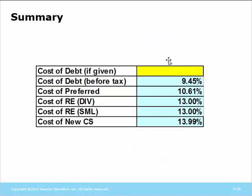In summary, we have the cost of debt before tax, the cost of preferred, the cost of retained earnings, and the cost of new common stock. The next part of this chapter will focus on how we use this cost information to calculate the total financing cost of the company.